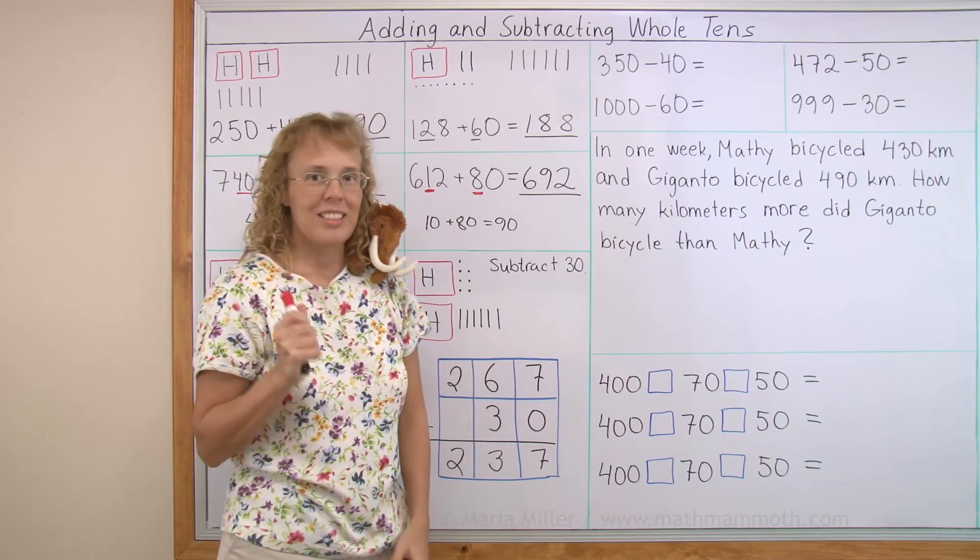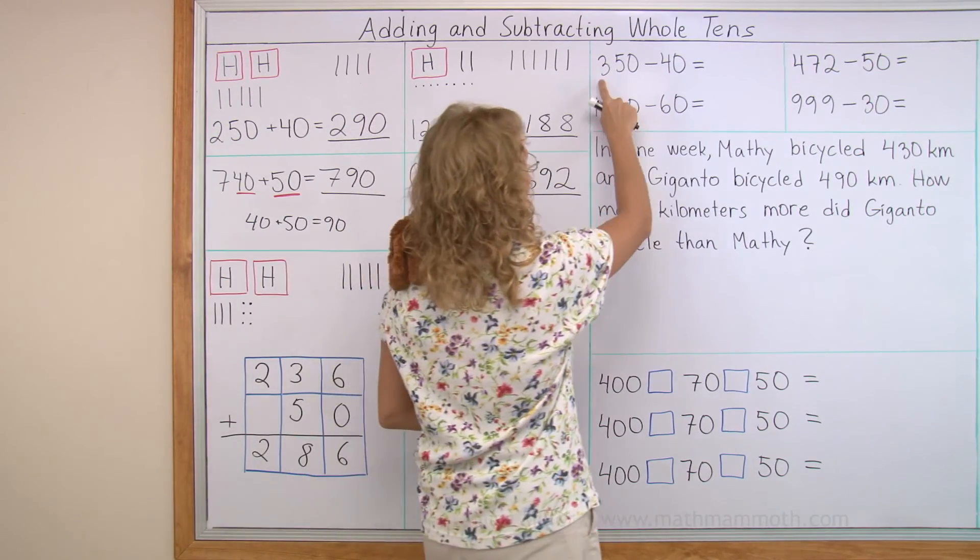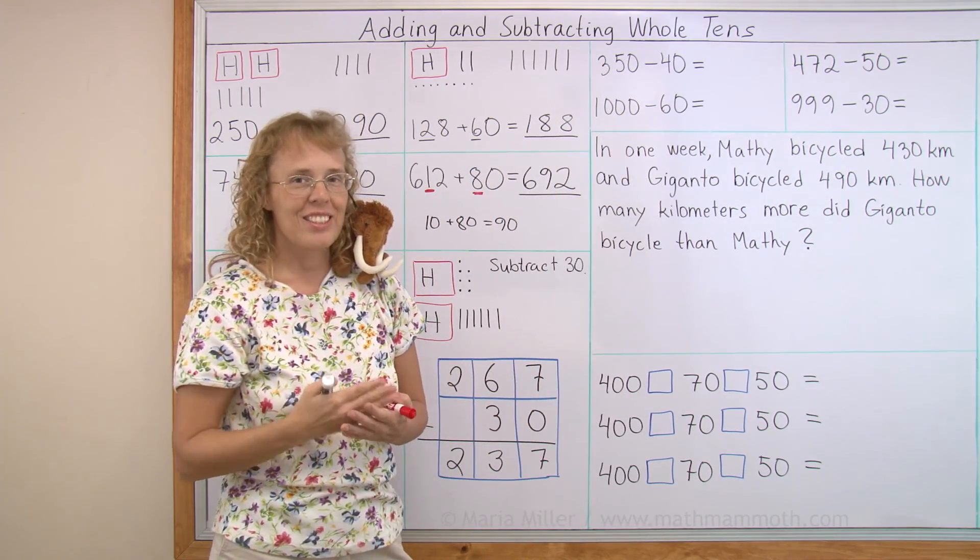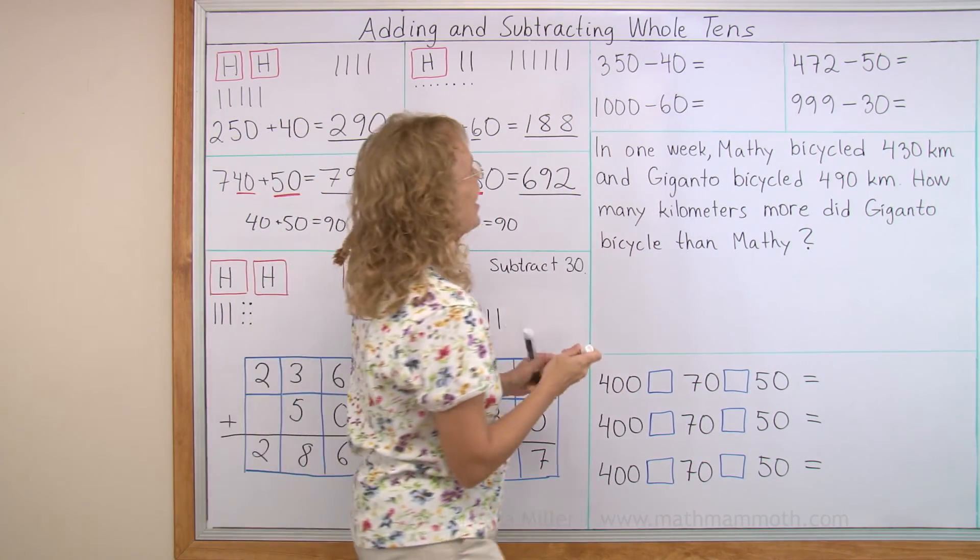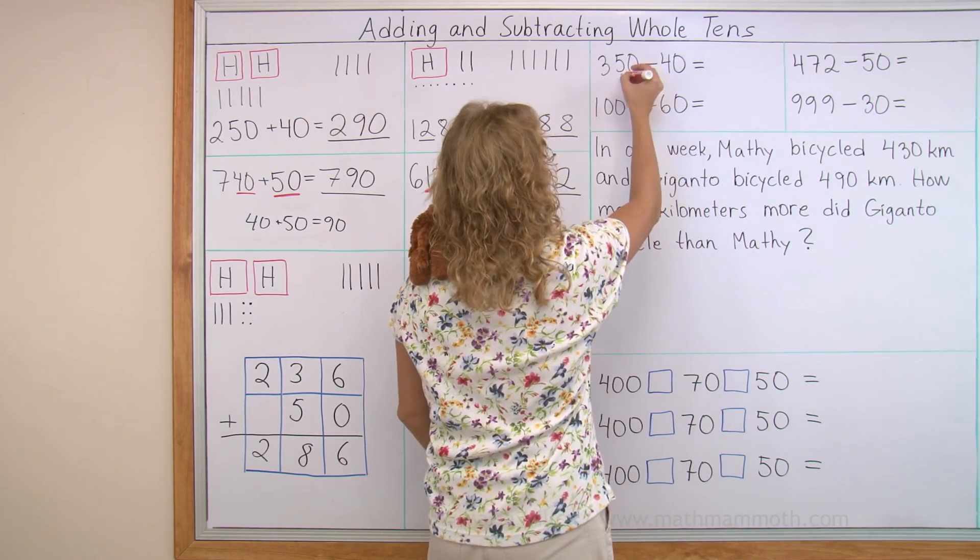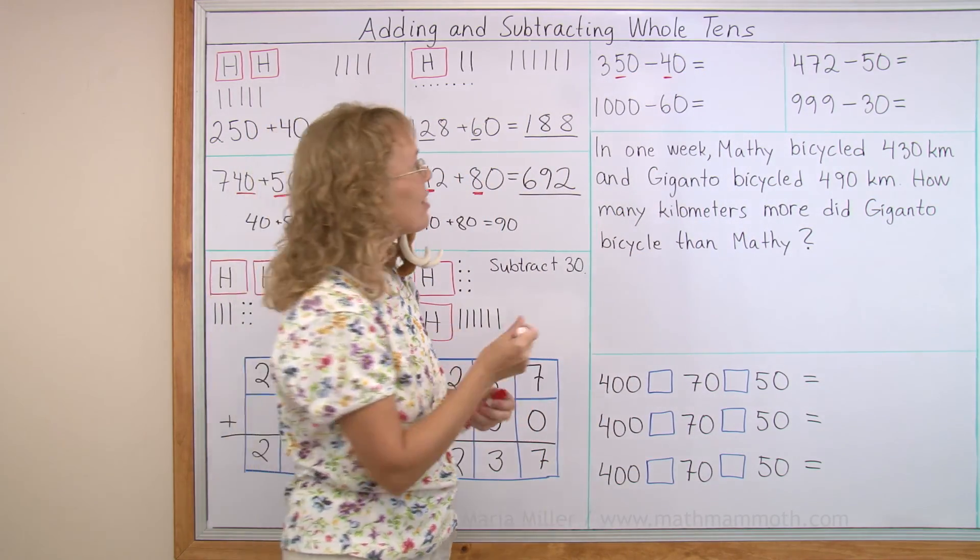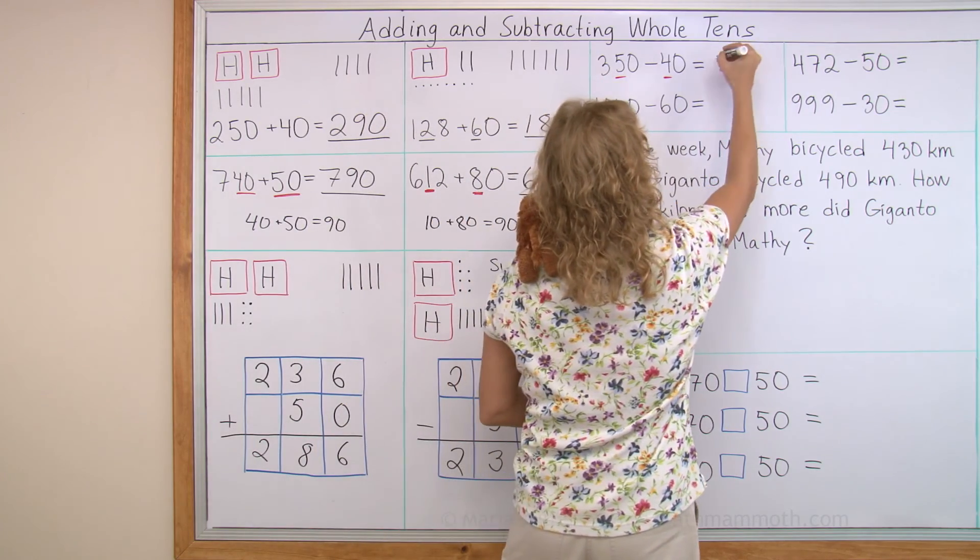Let's go on and subtract some more. 350 minus 40. We're subtracting whole tens, four whole tens. So again, look at this five tens minus four tens, that leaves one ten, right? And then we have the 300, 310.